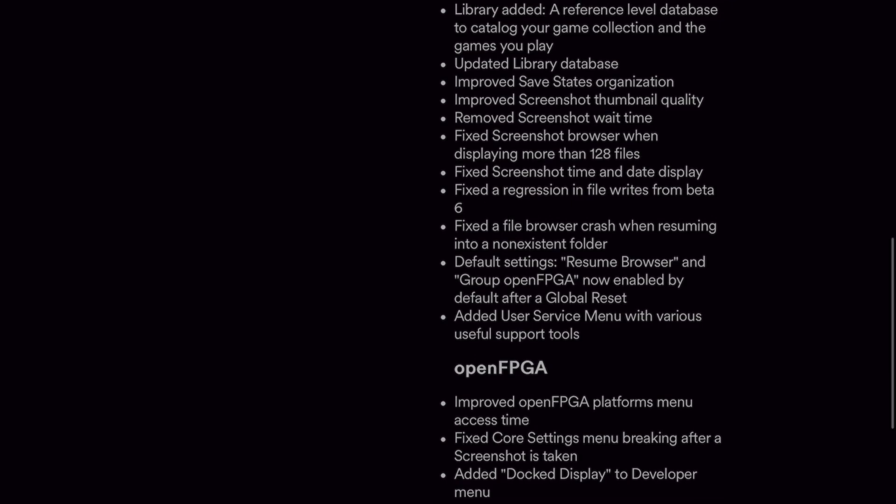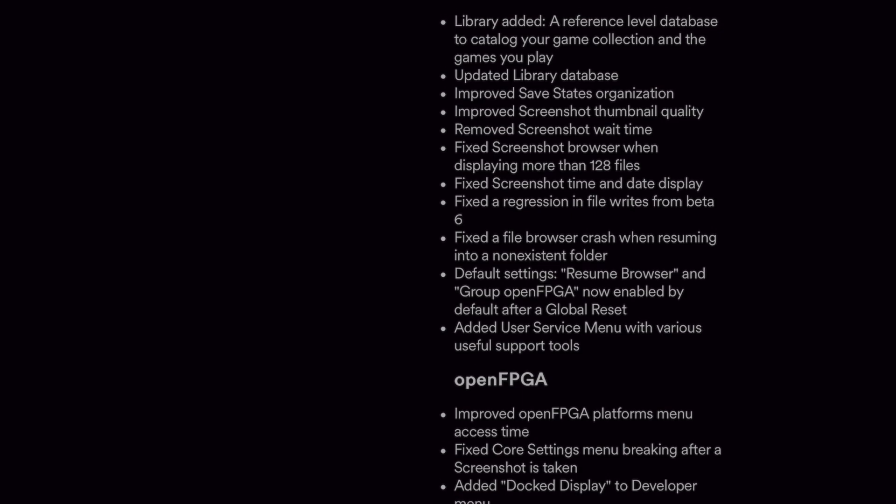There are two really interesting new things. The first is a library feature — when you play a game on your hardware, it will start tracking the time you play on that game, similar to how modern consoles do a summary of what you played. The Analog Pocket will now track which cartridges you play, how long you played them, and display that in a little grid.